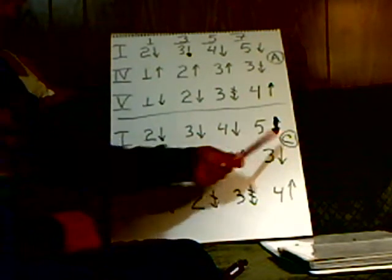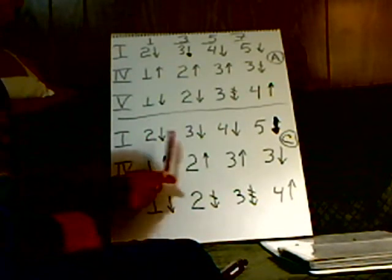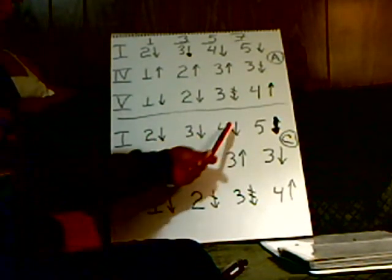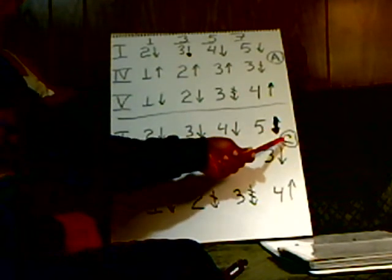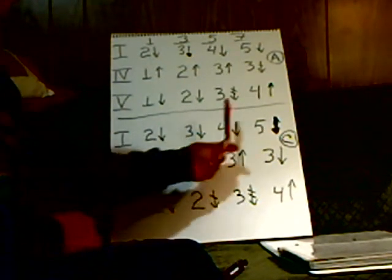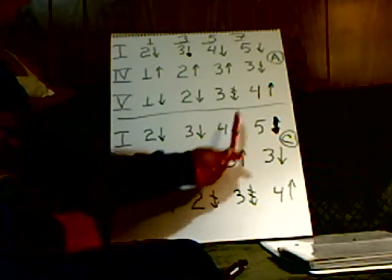Here for the C harmonica, this is G, B, D, F. On the C harmonica, the first, third, fifth, seventh note: G, B, D, F.